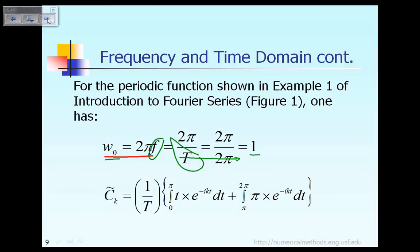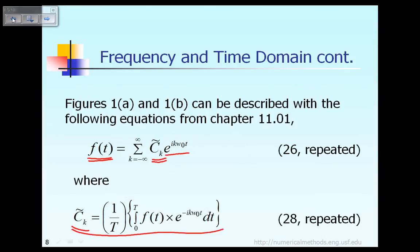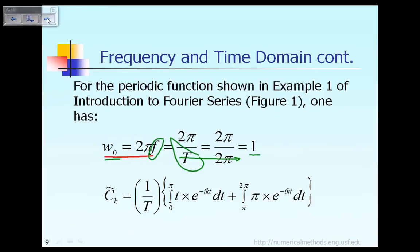Because ω₀ is equal to 1, in equations 26 and 28 from the previous slide, wherever you see ω₀ you can simply replace it with the value 1, or you can omit that factor for this particular example. That is why the previous formula for c̃_k can be expressed according to the last equation shown on screen.